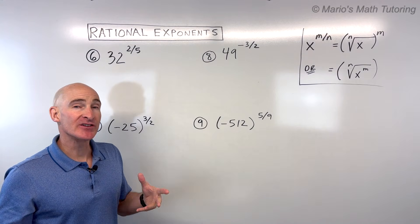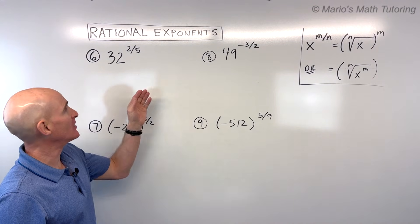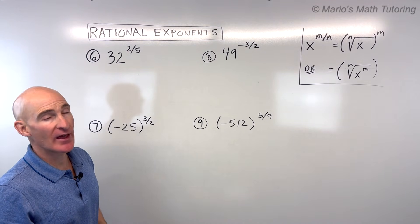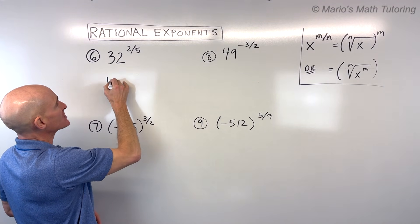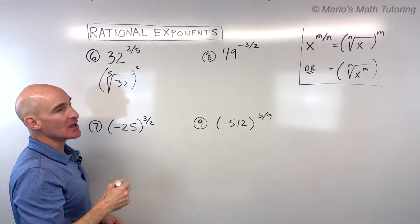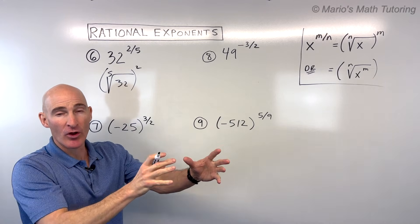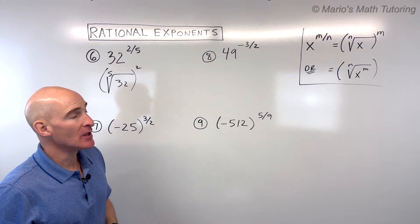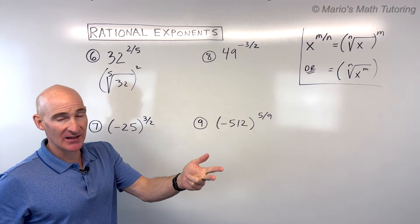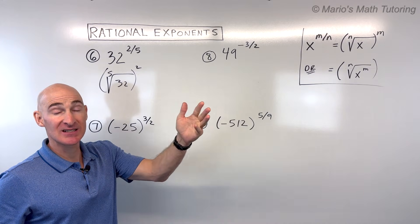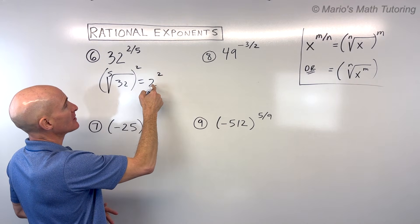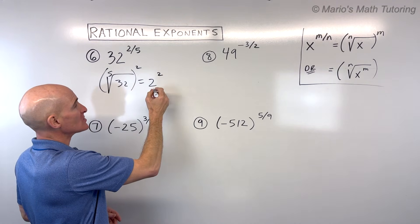For number 6, we have 32 to the two-fifths. The denominator is the root, so it's asking for the fifth root of 32 raised to the second power. What number multiplied five times gives 32? That's 2: 2×2=4, 4×2=8, 8×2=16, 16×2=32. So this equals 2 squared, which is 4.